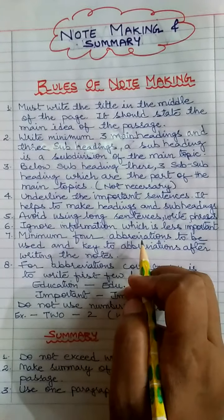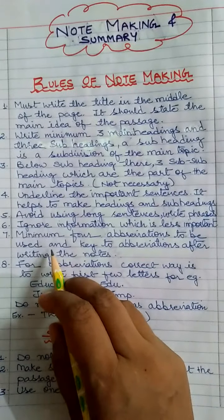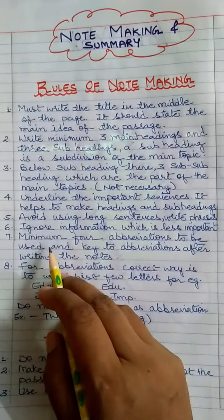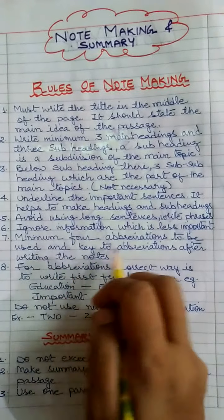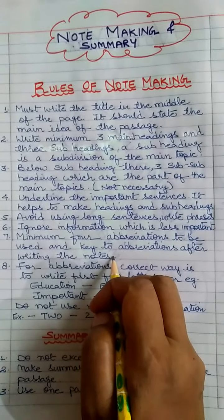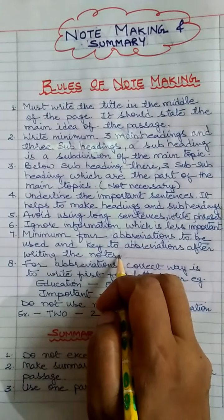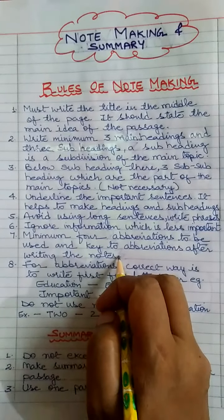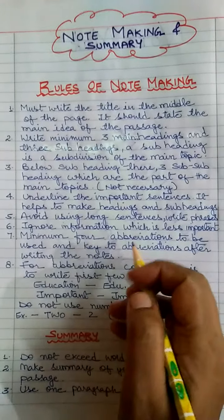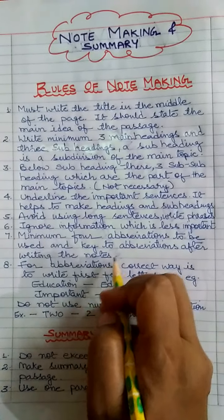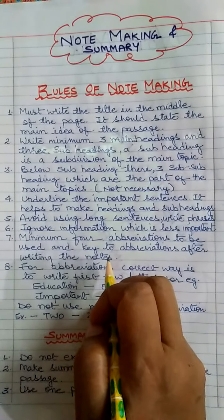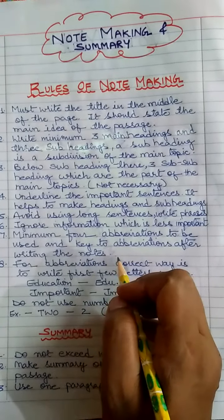Minimum four abbreviations, that is short forms, to be used. We can use short forms in between our notes and the key to abbreviation should be written after writing the notes. At least four abbreviations. Four is necessary to write in your notes. Other than that also you can write but it's of no use because you get marks only for four abbreviations. So why waste our time in writing other abbreviations other than four.